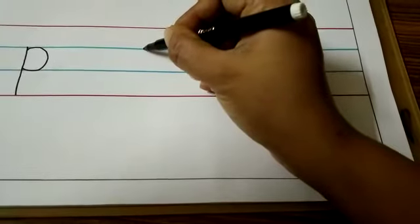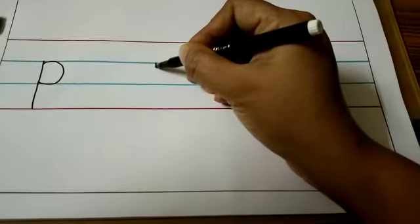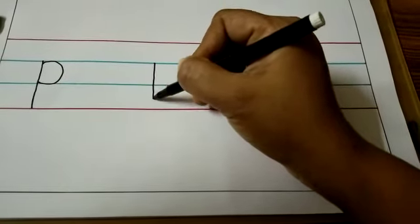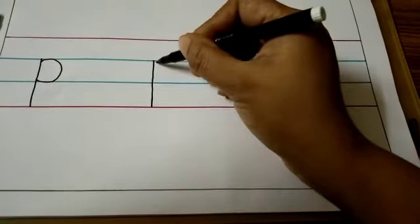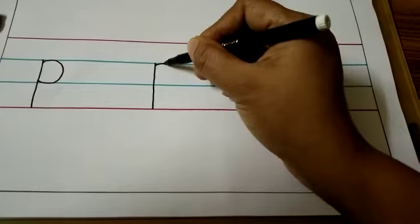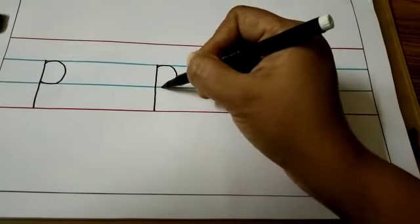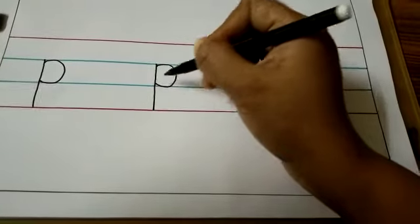Let me show you again. A standing line from the first blue line to the second red line, and a curve from the first blue line to the second blue line on the right side of the standing line.